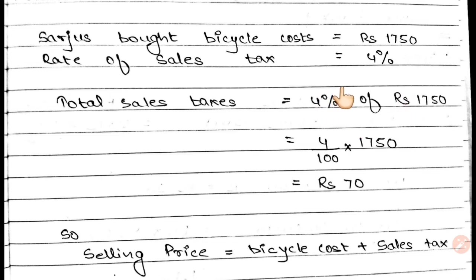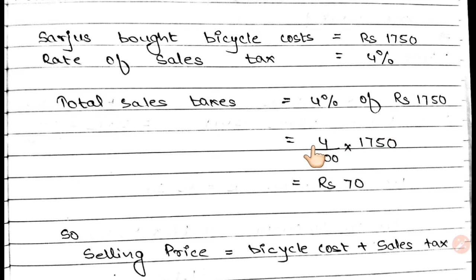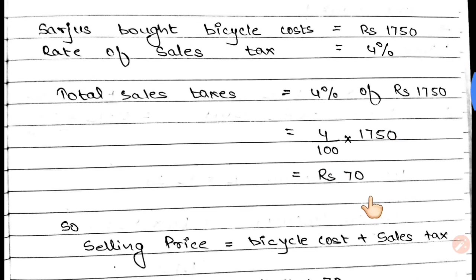Now where you have a percent sign, it means 4 upon 100. You will do multiplication and division, then cut the value. The sales tax amount comes to Rs.70.